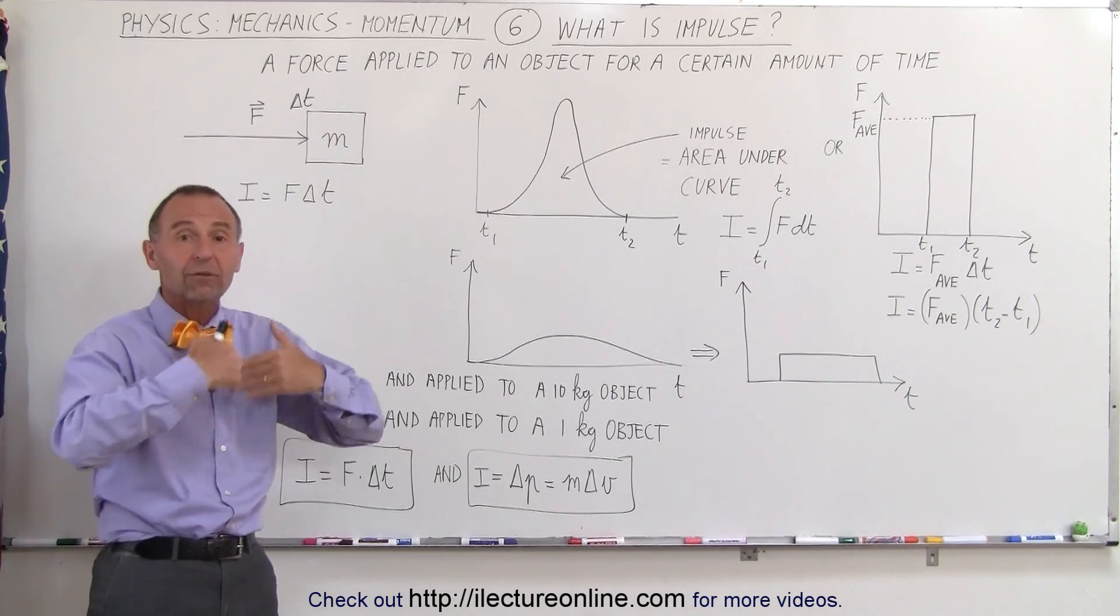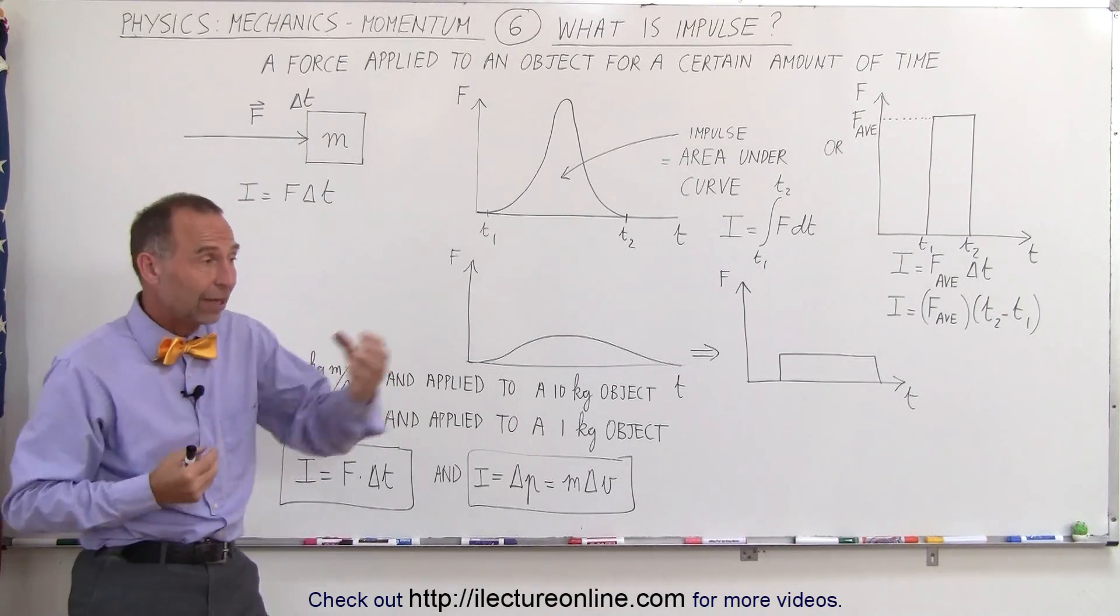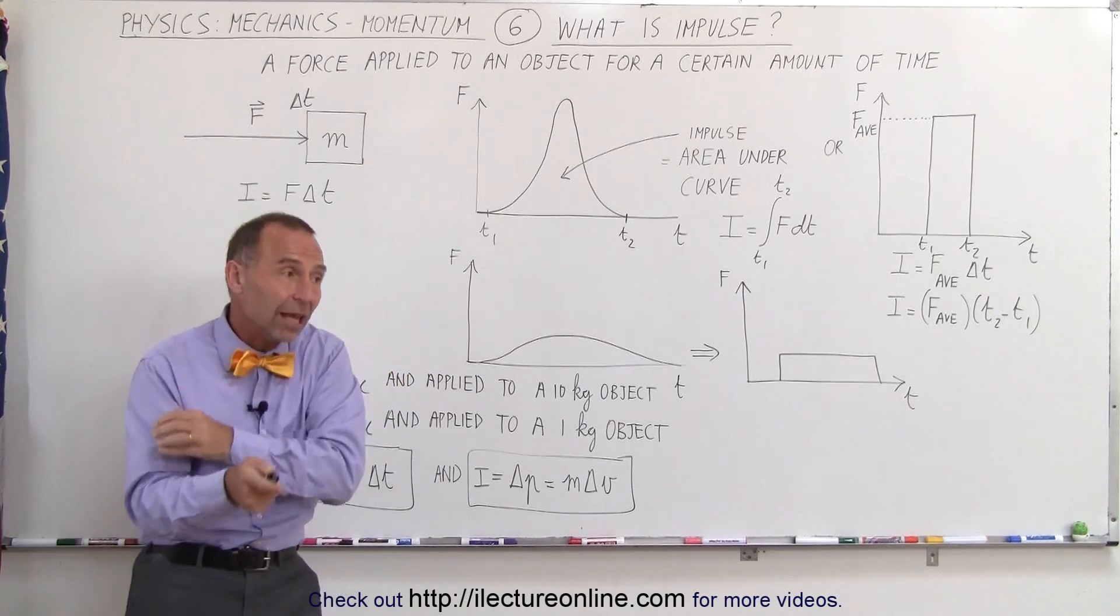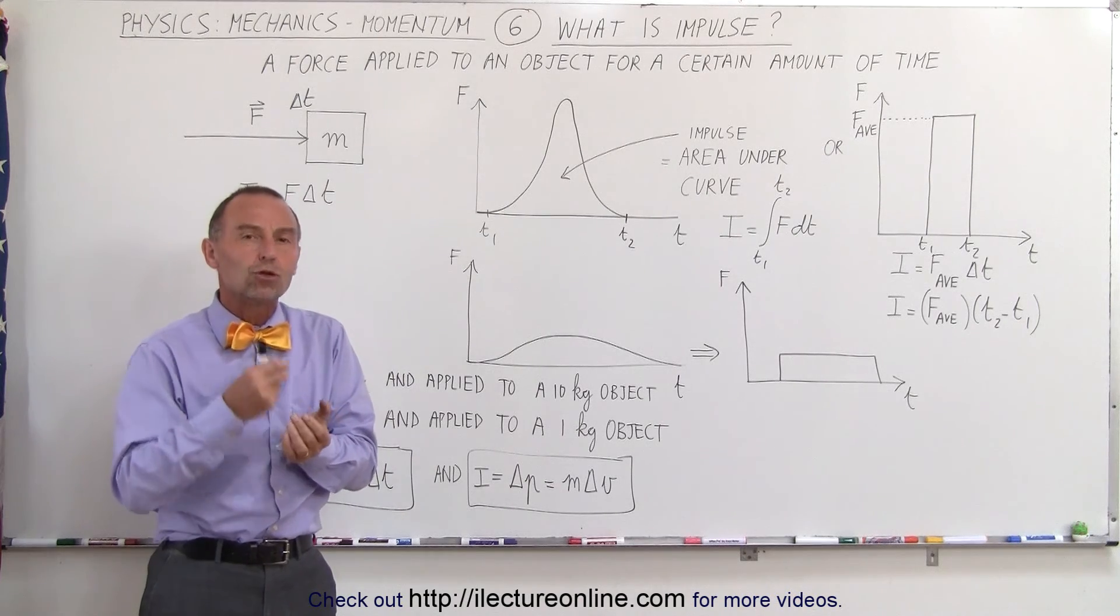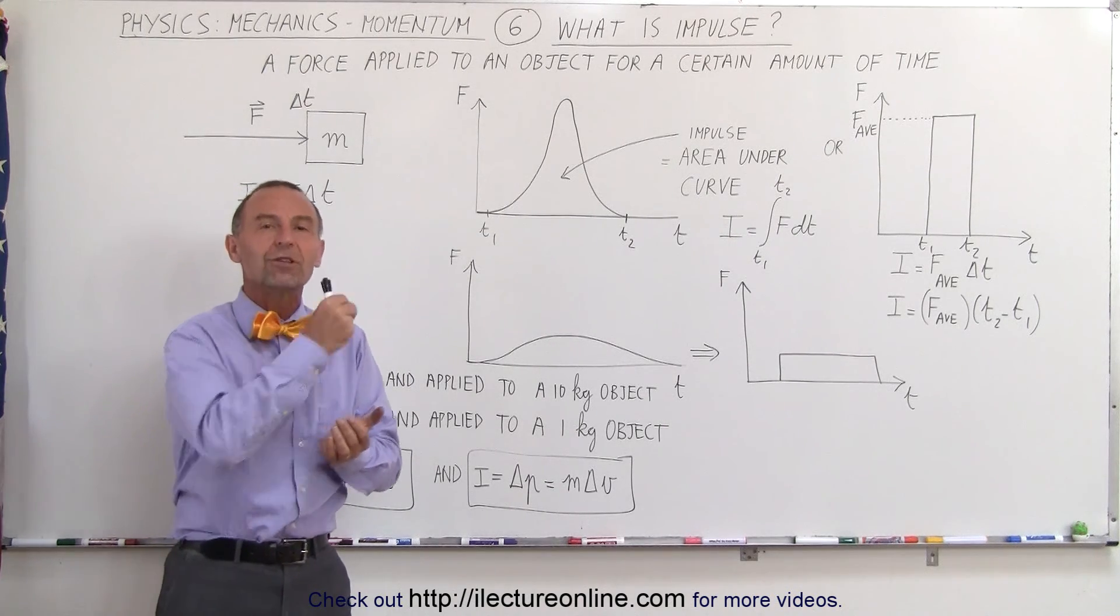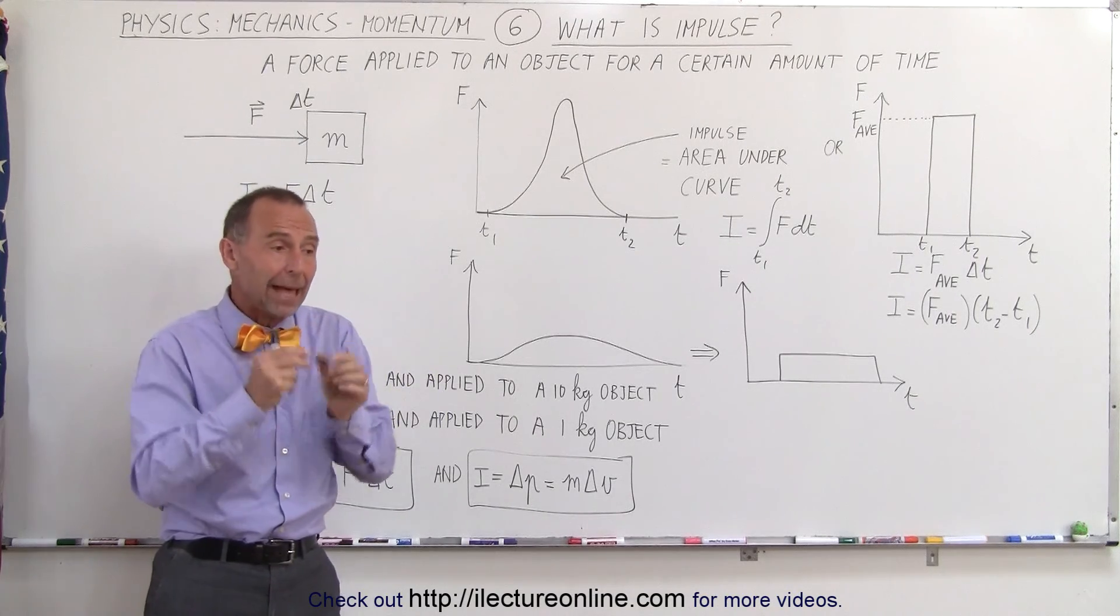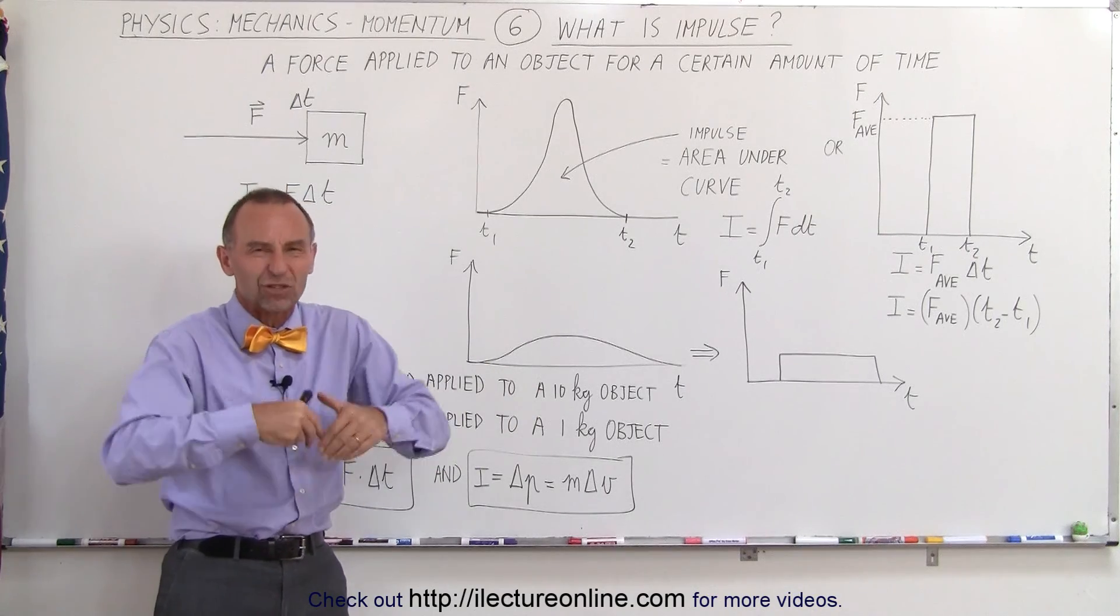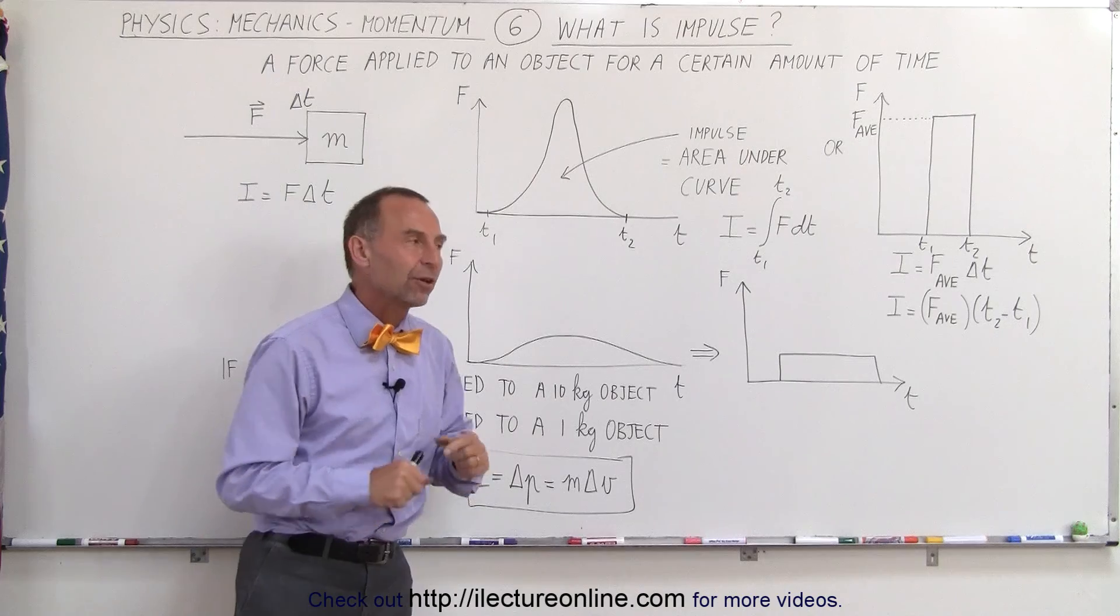you will give that object velocity, or you will change the velocity of the object. In one case, the baseball is flying in this direction, the baseball bat hits it, and now it's flying in the opposite direction. Basically what's happening is you're changing the momentum of the object. So an impulse, a force acting over a short period of time acting on an object, will change the momentum of the object. It will change the velocity, and change the momentum of the object.